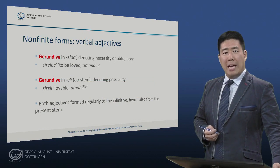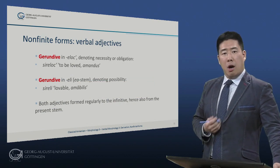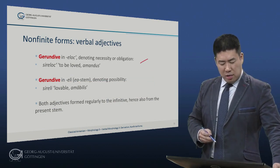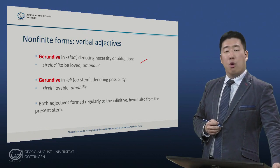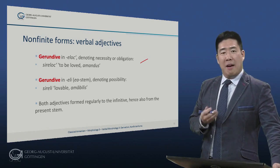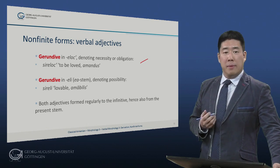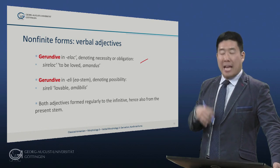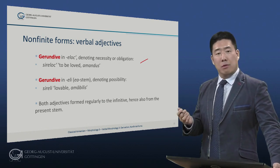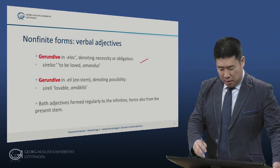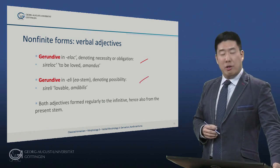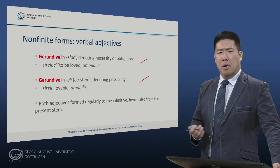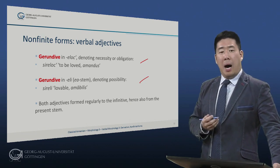Classical Armenian has verbal adjectives. The two most common are formed regularly to the infinitive, hence also from the present stem. There is a gerundive in -edots, which denotes necessity or obligation. So from the infinitive sirel 'to love or to be loved,' sirelots is an adjective meaning 'something that is to be loved' — Latin amandus, 'which must be loved.' We have a gerundive in -eli, which in contrast denotes possibility: sireli means 'something that can be loved,' i.e., lovable — Latin amabilis.